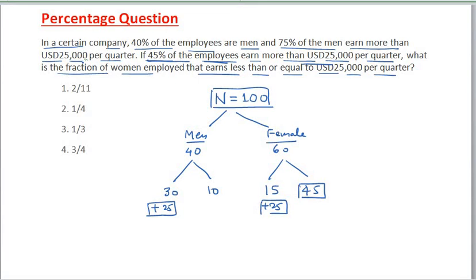Now the question is asking what is the fraction of the women employed that earn less than or equal to USD 25,000. First of all, women is how many? 60. So what fraction of 60 earn less than or equal to USD 25,000? 25 is what fraction of 60? So the answer is 25 by 60.